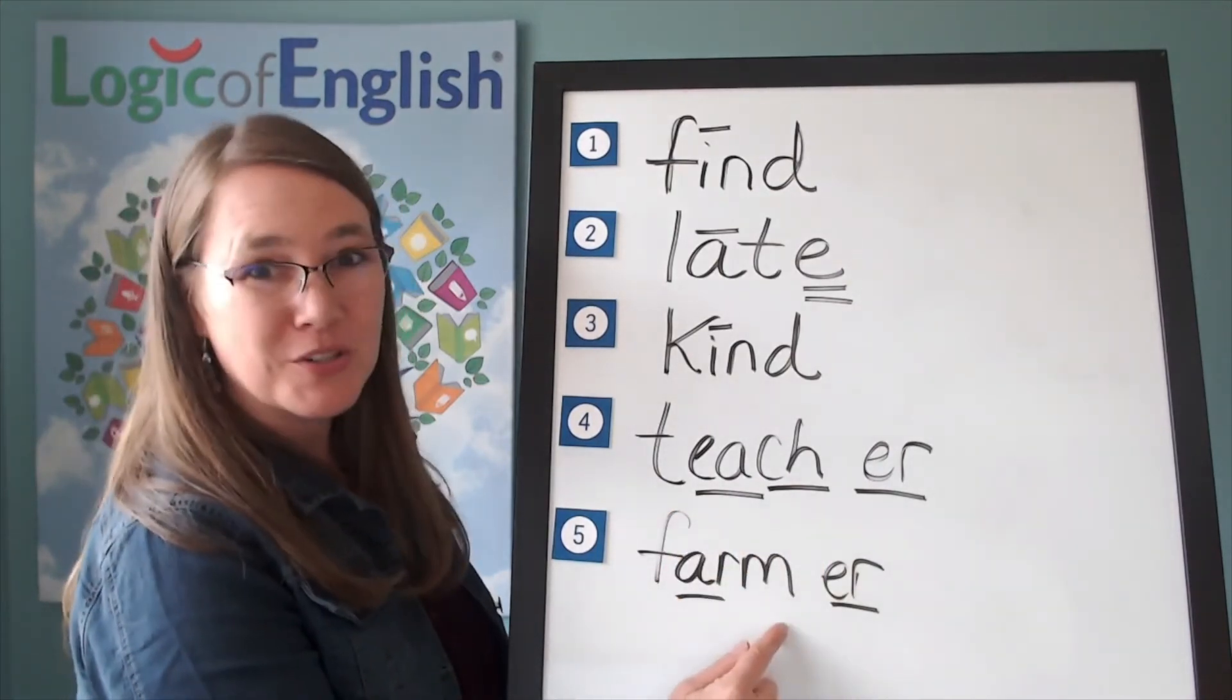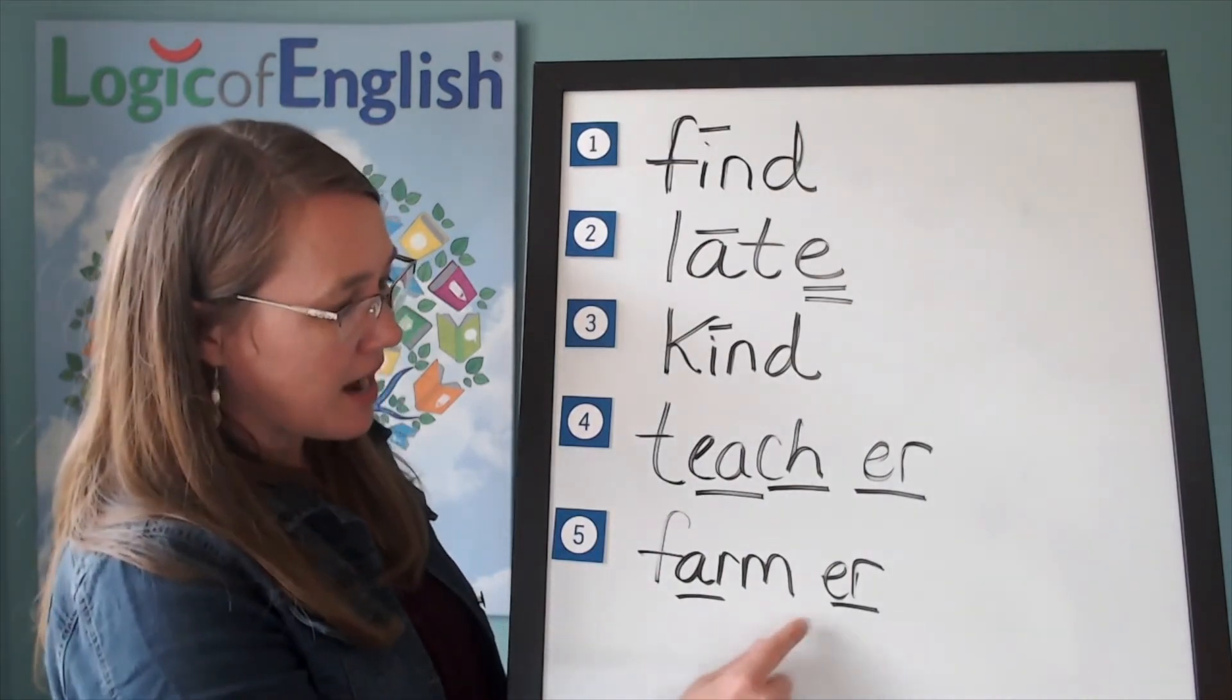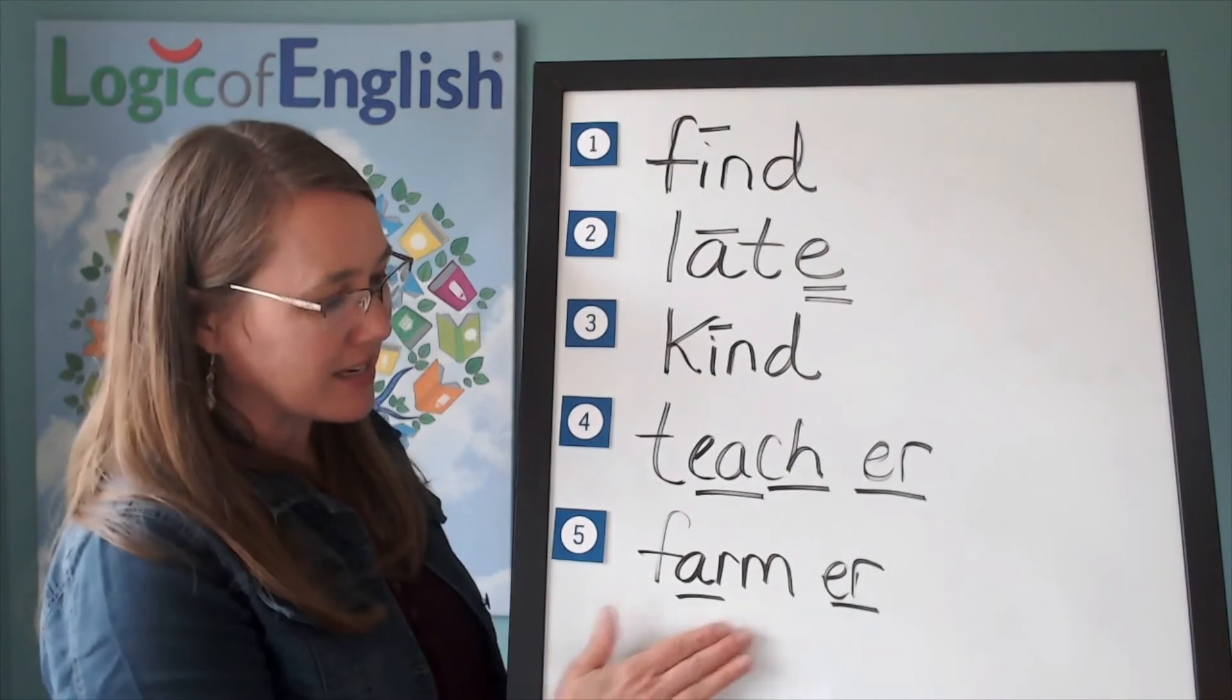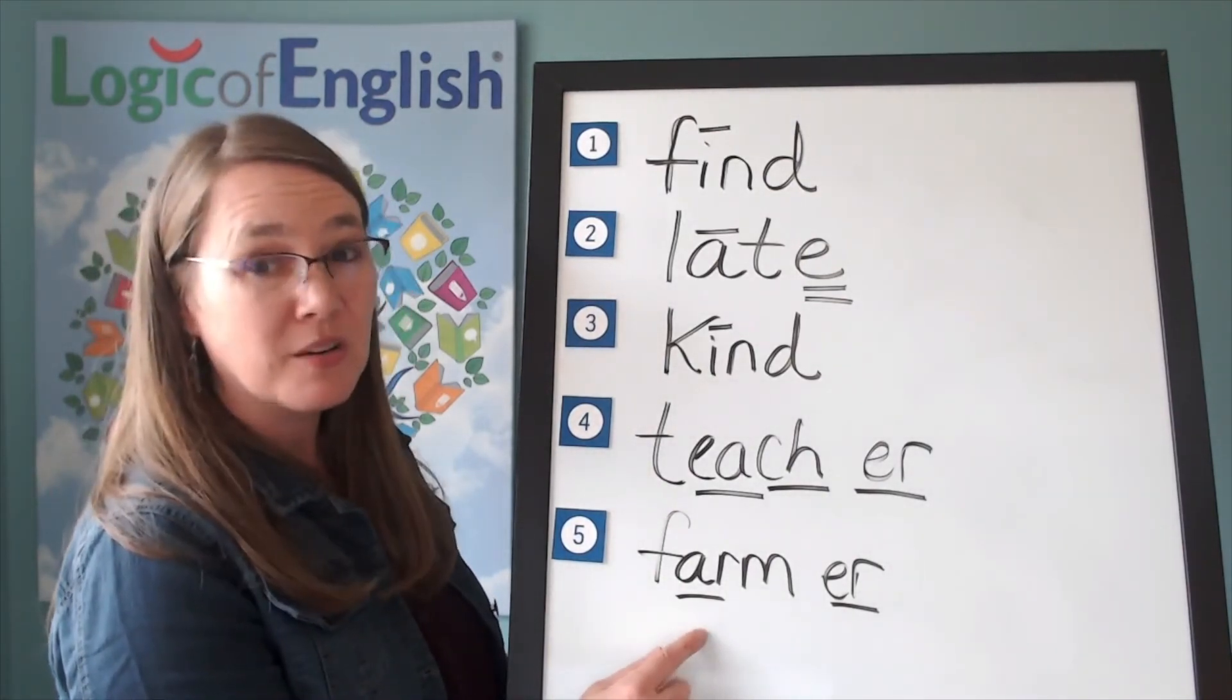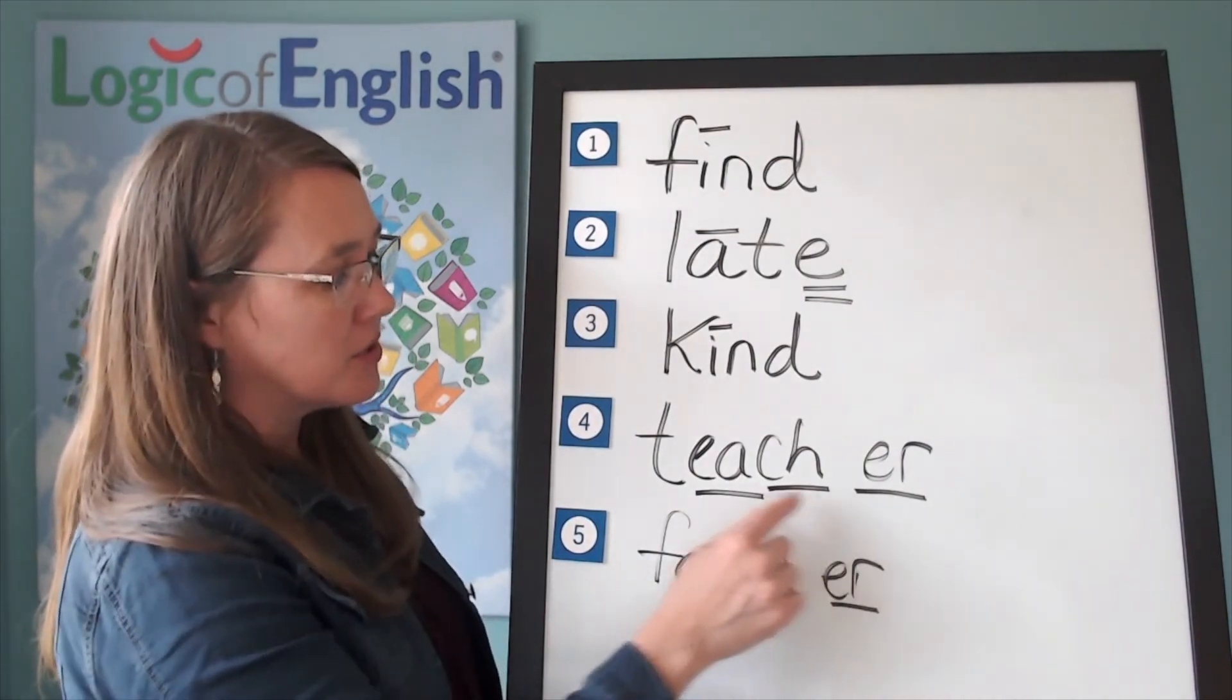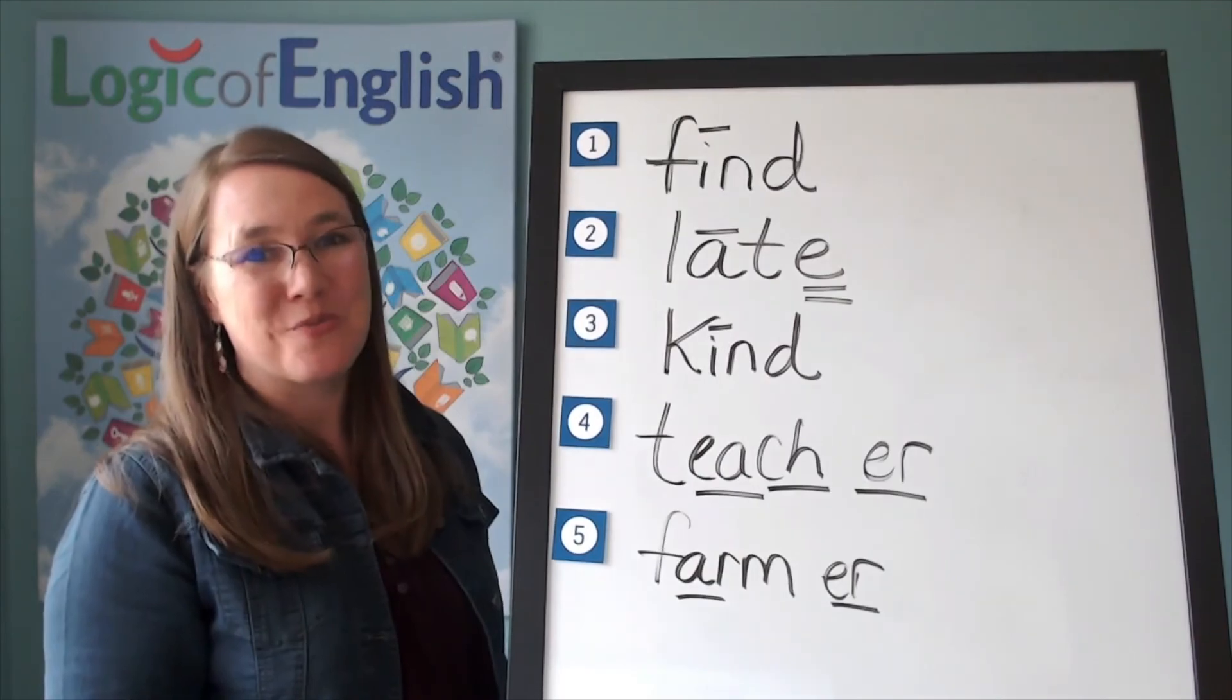What does a farmer do? It's a person who farms. So you can see how these words are related and how we added the ur to be a person who works on a farm or a person who farms. This is a person who teaches. Look at all that you're learning about words.